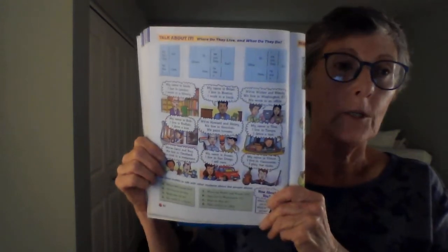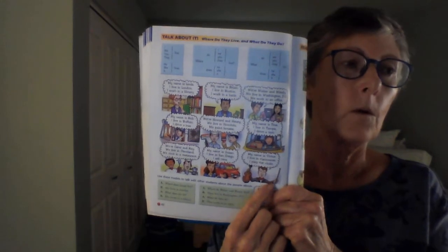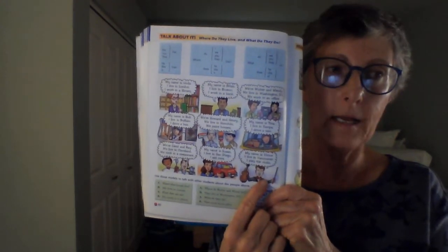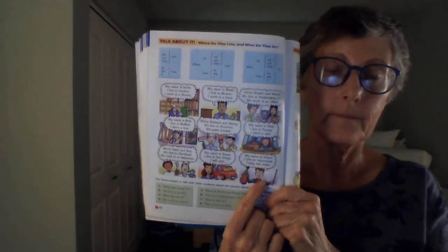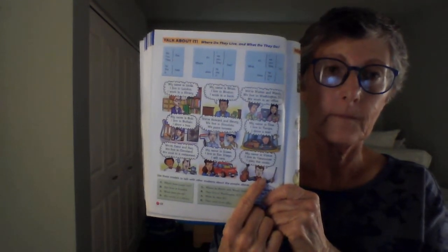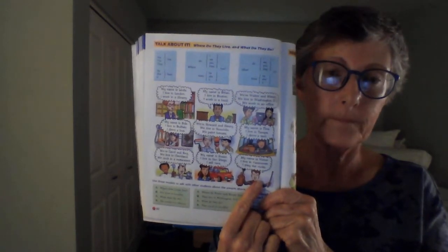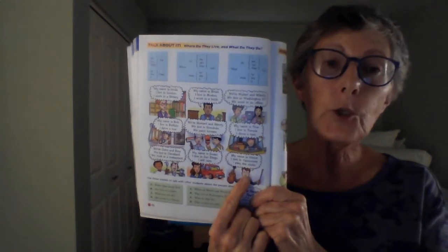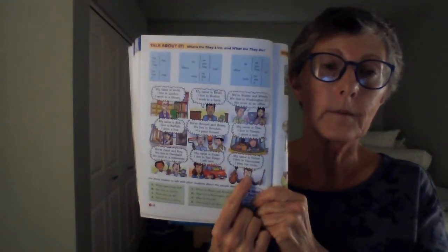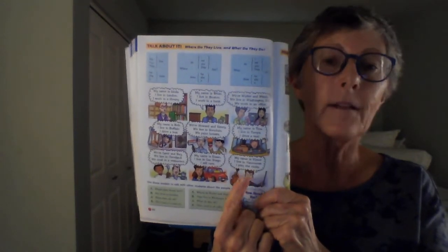What one shall we do next? Oh, I know. Where does Victor live? Correct. He lives in Vancouver. What does he do? Correct. He plays the violin.